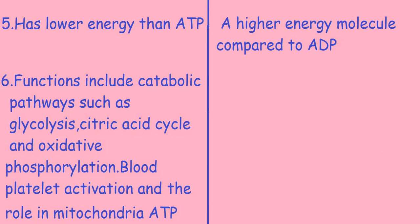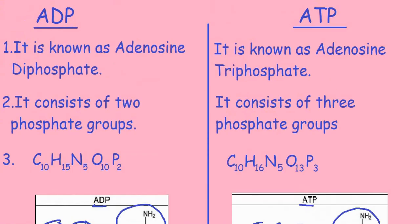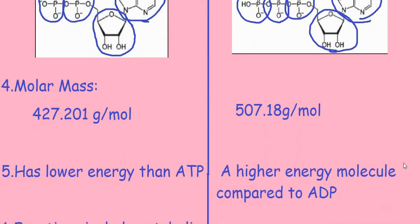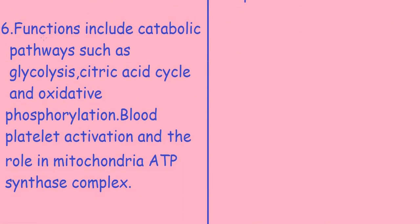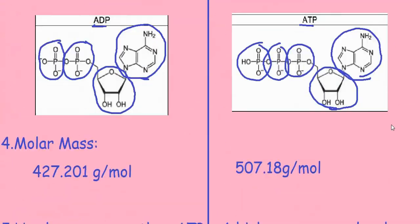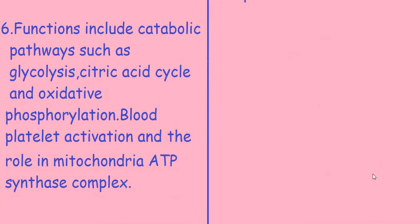The sixth point covers functions. ADP functions include catabolic pathways such as glycolysis, the citric acid cycle, and oxidative phosphorylation, as well as blood platelet activation and a role in the mitochondria ATP synthase complex.